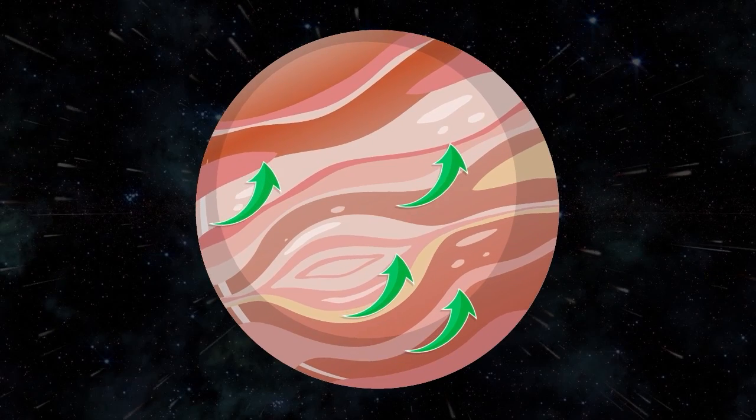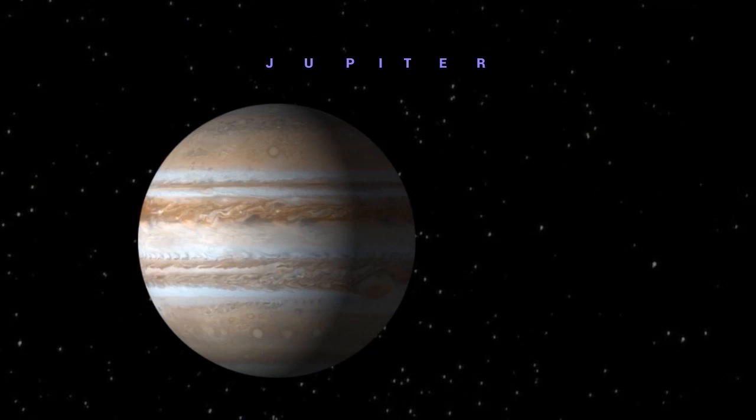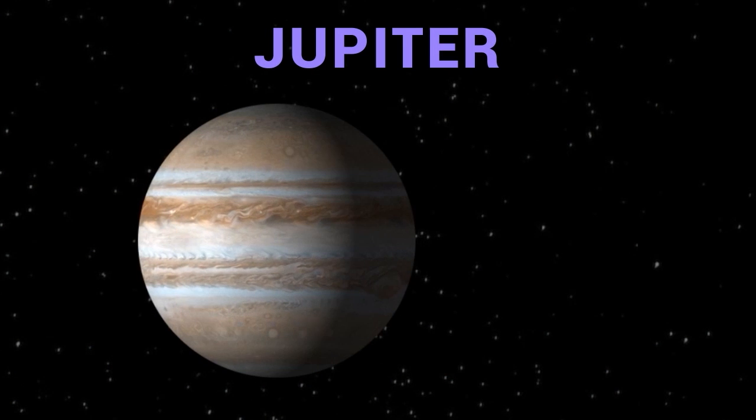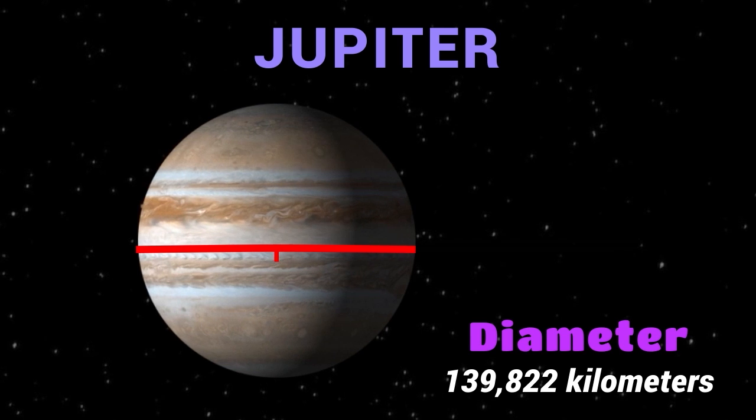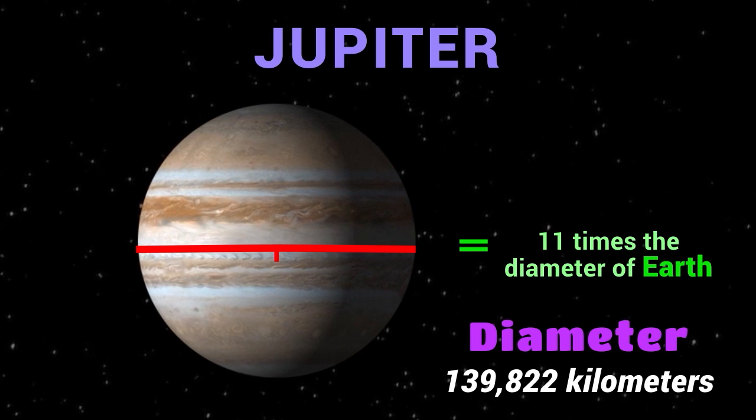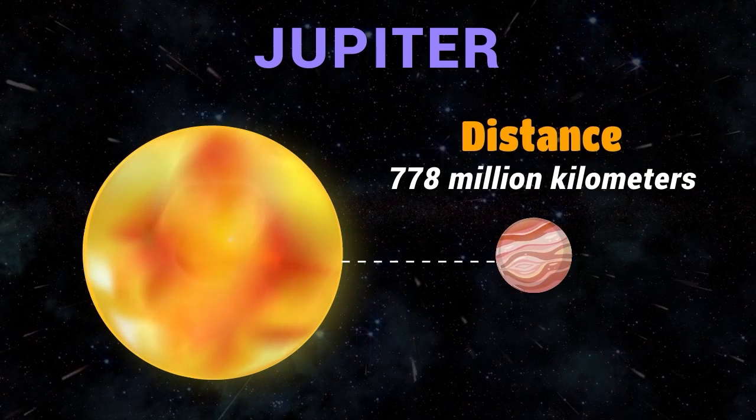Jupiter is a gas giant and is known for its colorful bands of clouds that encircle the planet. Jupiter has a diameter of about 139,822 kilometers, which is about 11 times the diameter of Earth. It is located about 778 million kilometers from the sun.